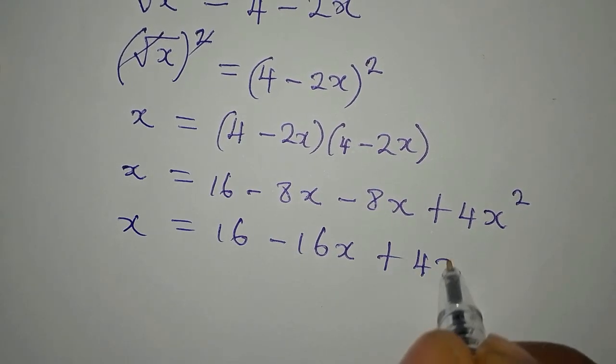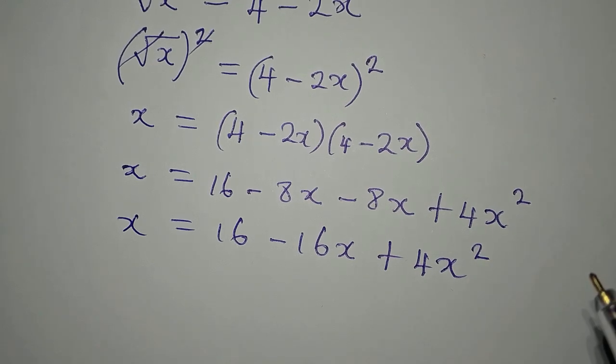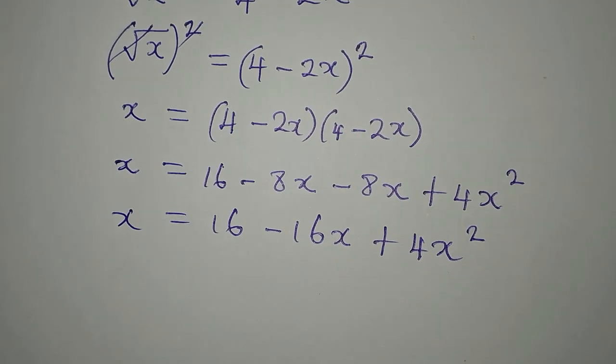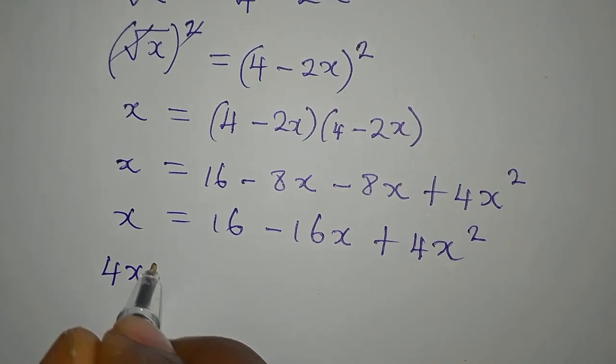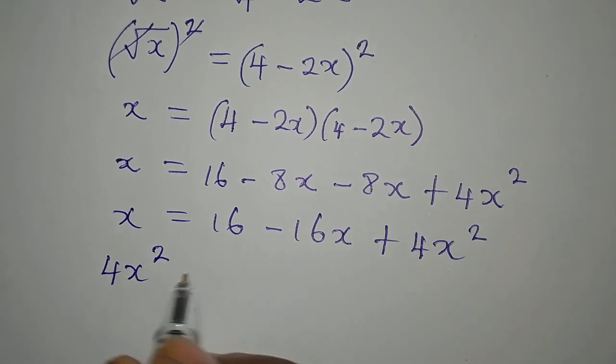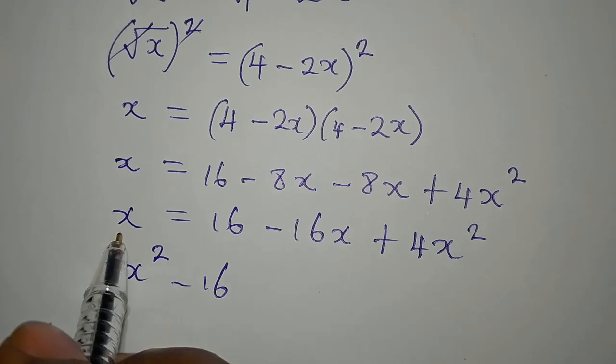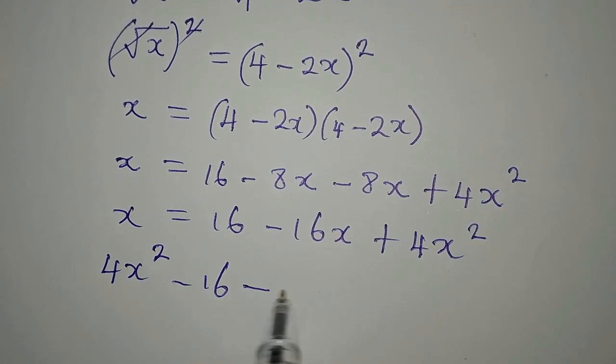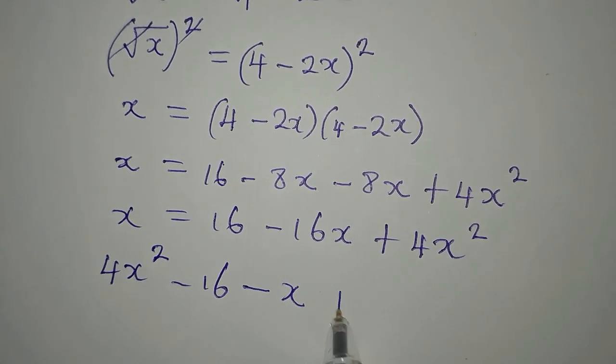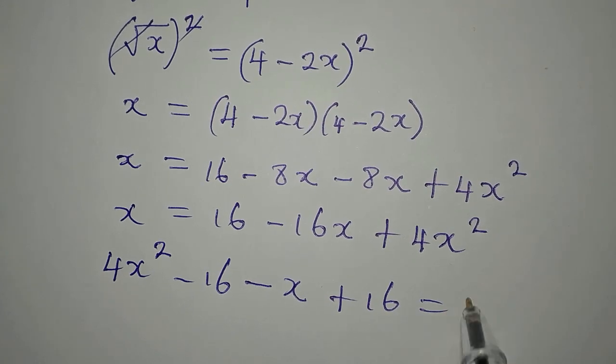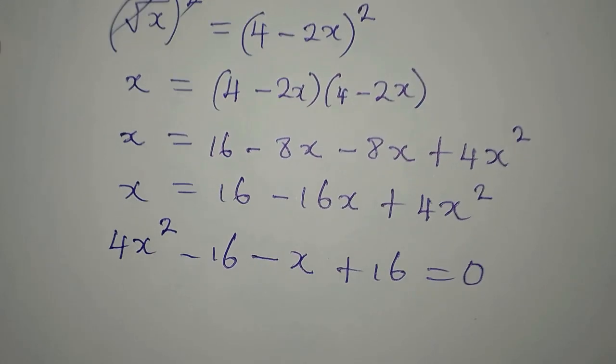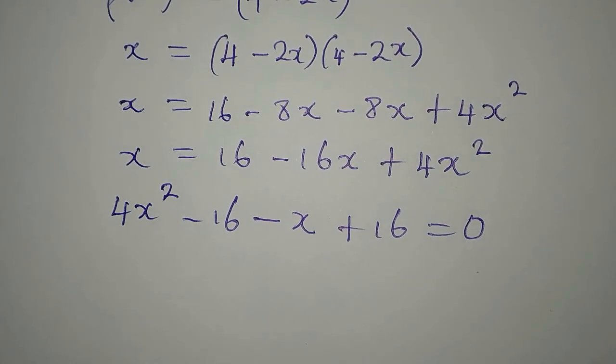From here we can begin to simplify. x is equal to 16 minus 16x because minus 8x minus 8x is minus 16x, then I have plus 4x squared. Then from here let's write the one with the highest power, that is 4x squared, then this is minus 16, this x will follow becomes minus x, then we have plus 16 everything is equal to zero.